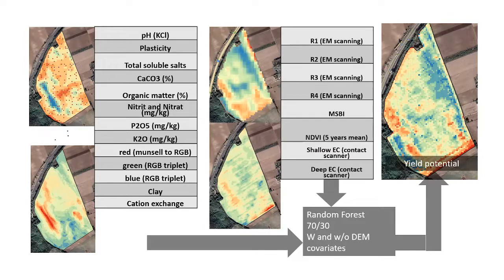After modelling all the relevant properties, a random forest was applied to a database including the DEM-based properties, laboratory-analyzed results, topsoil color, the previously mentioned classification units, mean NDVI, MSAVI, and soil scanning results — mainly soil electrical conductivity measured by different contact and non-contact scanners.